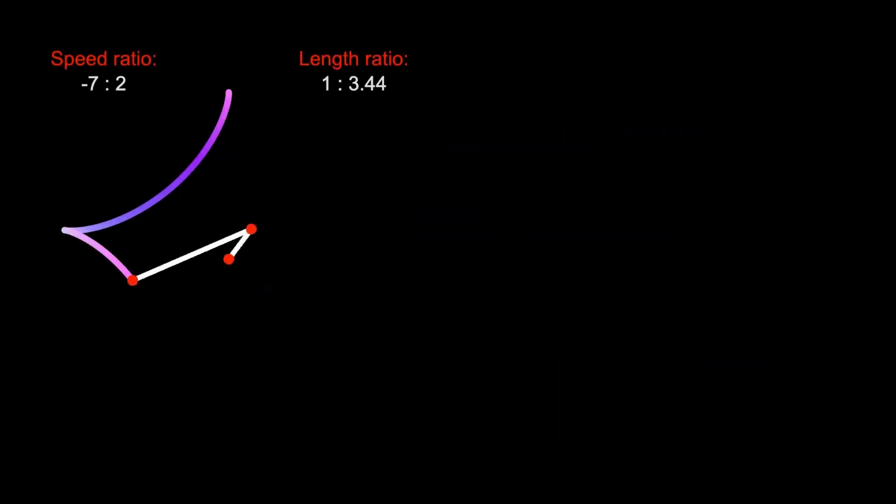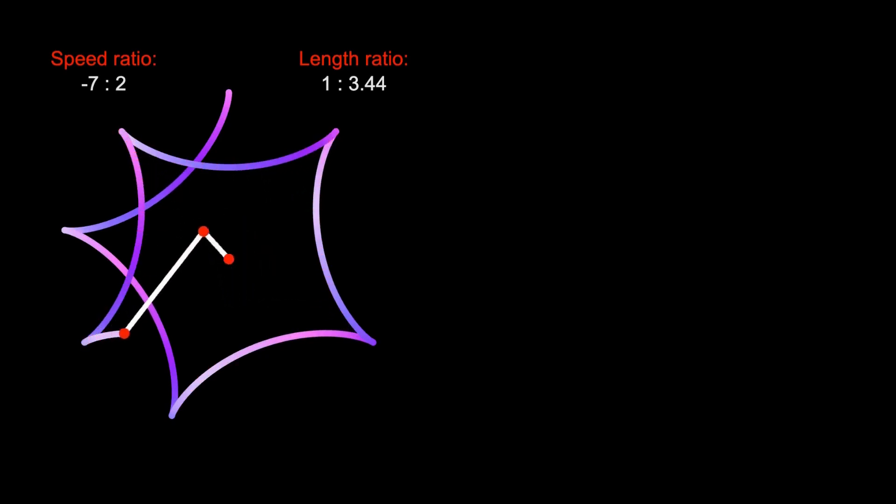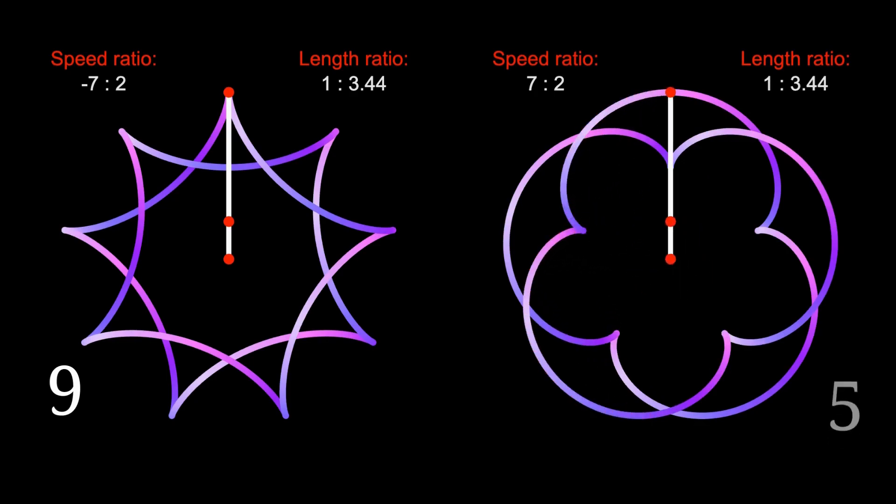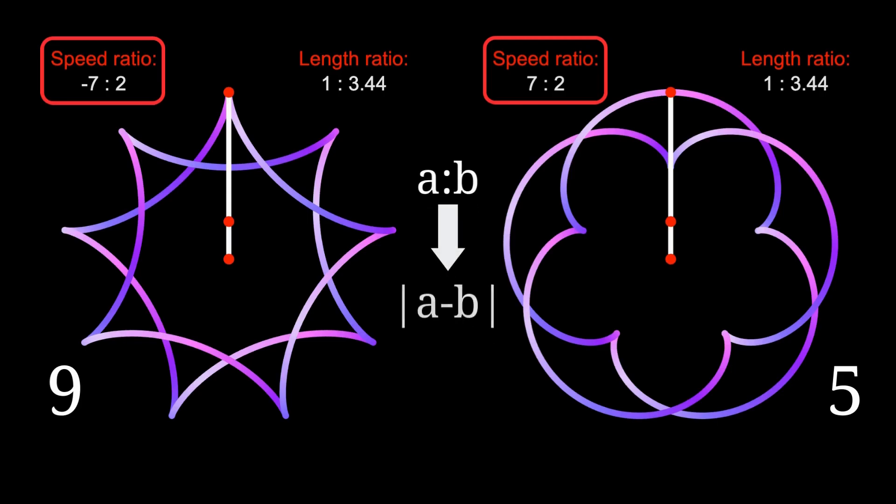If you are like me, you may be interested in what determines the number of folds. For example, why this is a nine-pointed star, and why this is a five-petal flower. It looks like if the speed ratio is a to b, then the number of folds of the pattern is the absolute value of a minus b. But why?